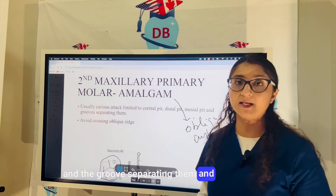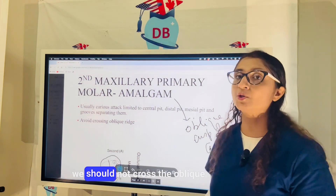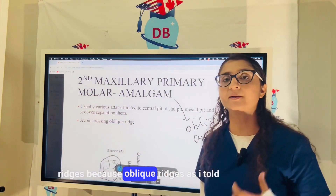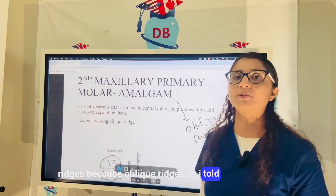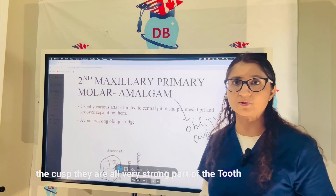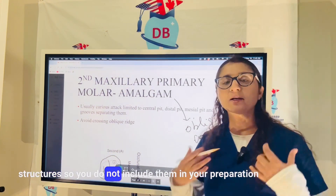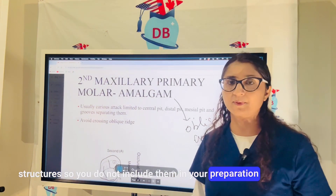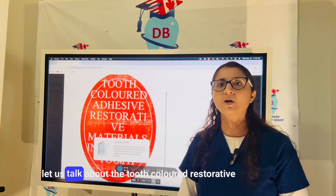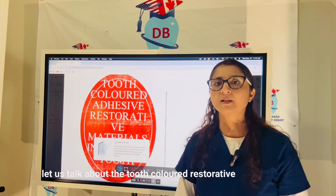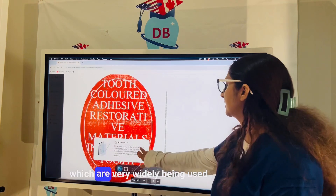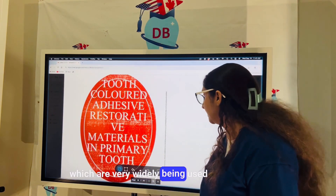In the second primary molar, the carious attack is usually limited to the central pit, distal pit, mesial pit, and the grooves separating them. We should not cross the oblique ridge, because the oblique ridge and cusps are very strong parts of the tooth structure and should not be included in the preparation if they are not carious.